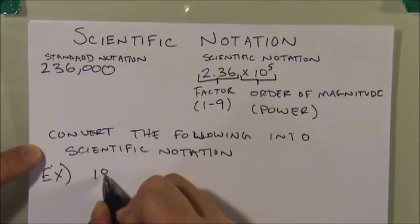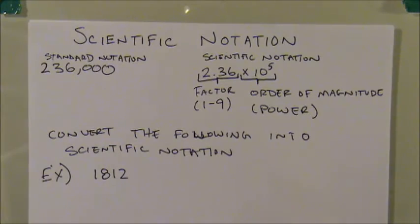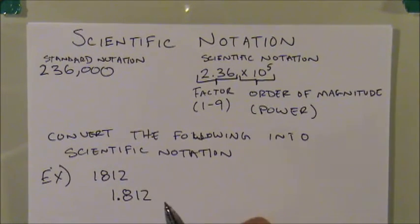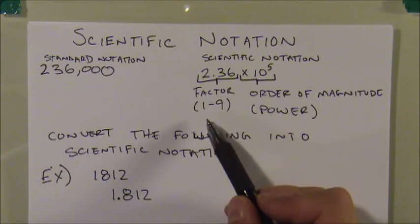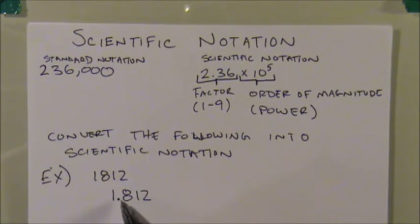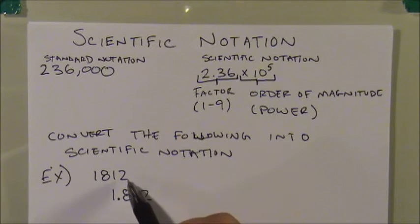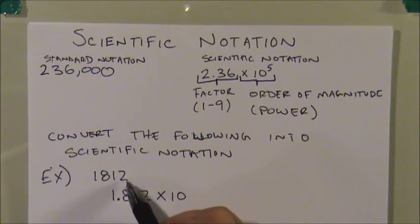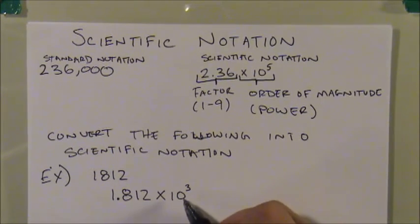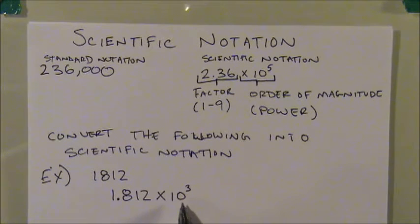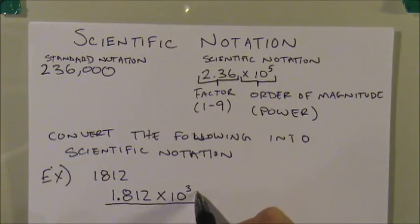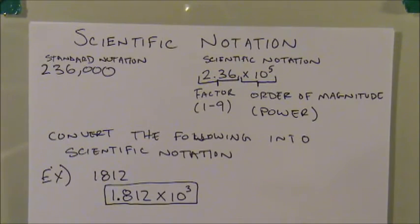Let's convert 1812 into scientific notation. The first step is to move the decimal until there is a single non-zero digit to the left of it, with all remaining digits to the right. In this case I moved the decimal three places to the left, giving 1.812, which is much smaller than 1812. So multiplying by 10 to the third undoes that: 1.812 × 10³ equals 1812, just expressed in a new way.